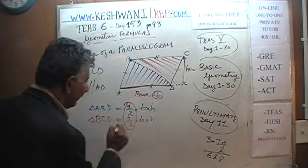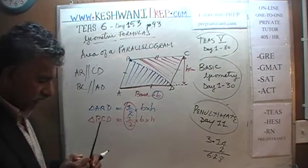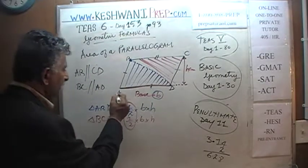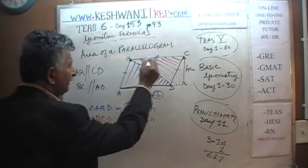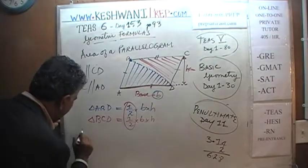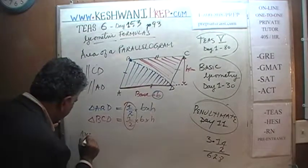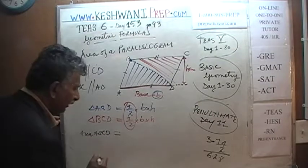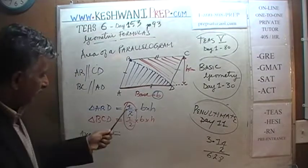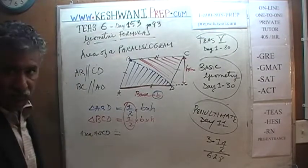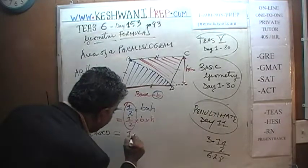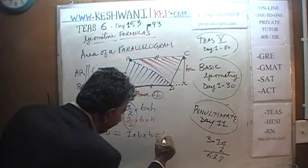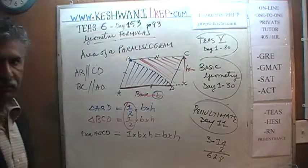Half plus half is one. Therefore, the area of the entire parallelogram ABCD is just one times base times height — it's simply base times height. It's very similar to length times width, but in the context of a parallelogram, one does not speak in terms of length and width. One speaks in terms of base and height.